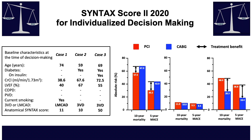Case three: a 69-year-old patient with insulin-dependent diabetes, maintained creatinine clearance, normal ejection fraction, and three-vessel disease with a very high anatomical SYNTAX score. At 10 years, there is a gradient of 20% in all-cause mortality — bypass surgery is clearly better by 20%. The MACE rate at five years is also better with bypass surgery by 20%. For this patient, it is an ethical imperative to proceed with bypass surgery.